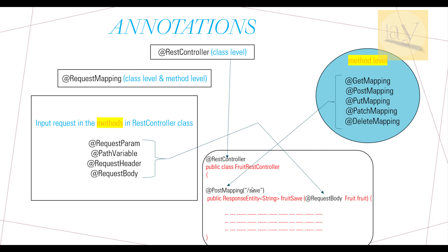These annotations are used on top of the method level. When you annotate @PostMapping, internally it uses @RequestMapping with method equals to RequestMethod.POST. Similarly, @GetMapping internally uses @RequestMapping with method equals to RequestMethod.GET.